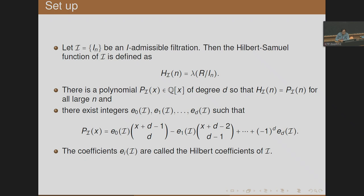For any I-admissible filtration, we look at the length function — the length of R mod I^n — known as the Hilbert-Samuel function of I. It is well known that this function is of polynomial type, meaning there exists a polynomial with rational coefficients that coincides with the length function for all large values of n. This polynomial has degree D, the dimension of the ring. Normalizing, we can write it so that all coefficients are integers; these E_i(I) are integers, known as the Hilbert coefficients of I.